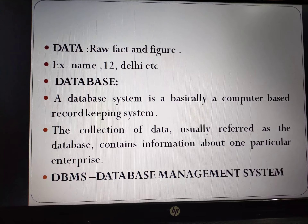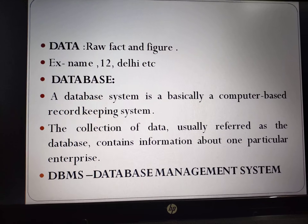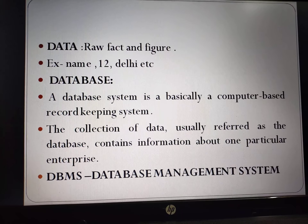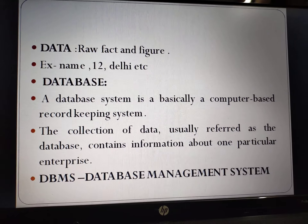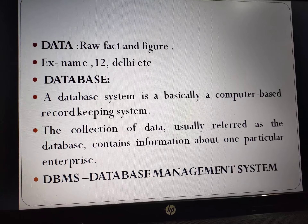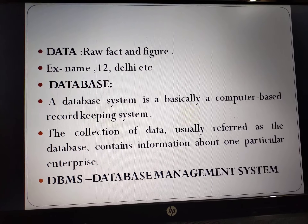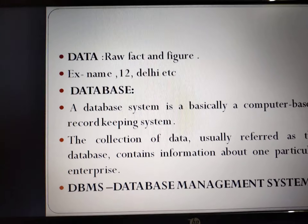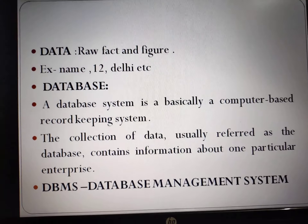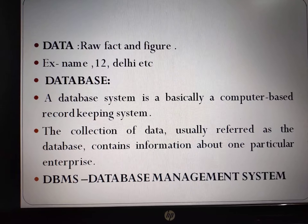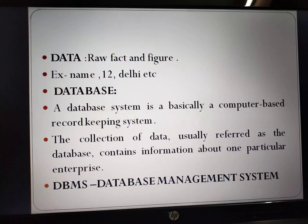The topic of data is raw fact and figure. If you understand any number, digit, or special characters — whatever you can think of — they all are data. Examples include: name, roll number, cities, book name, Python, mobile, laptop, etc. They all are in the form of data. Bank account numbers, PAN numbers, Aadhaar card, etc. — they all are forms of data.